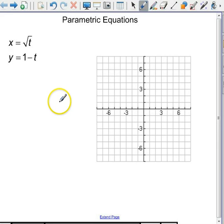Parametric equations are a way of describing an object's position given a third parameter, usually time. So for example, x is described as the square root of t and y is 1 minus t.